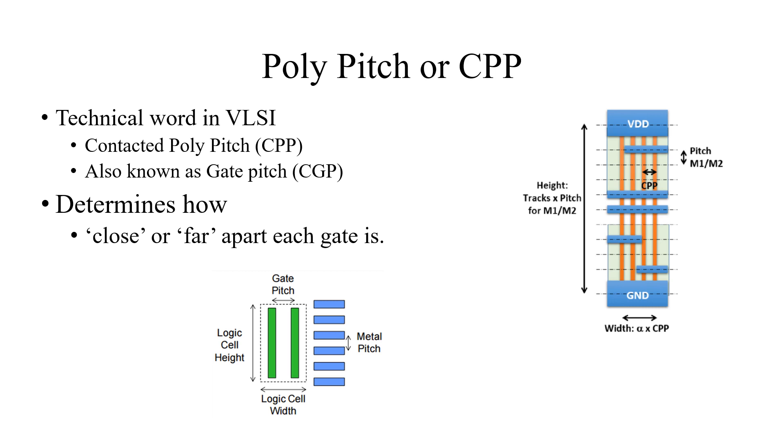Contacted poly pitch (CPP) and contacted gate pitch are synonymous. This determines how close or far apart each gate is. If you can see the diagram, the green colors are polys, and the distance between them is the poly pitch.